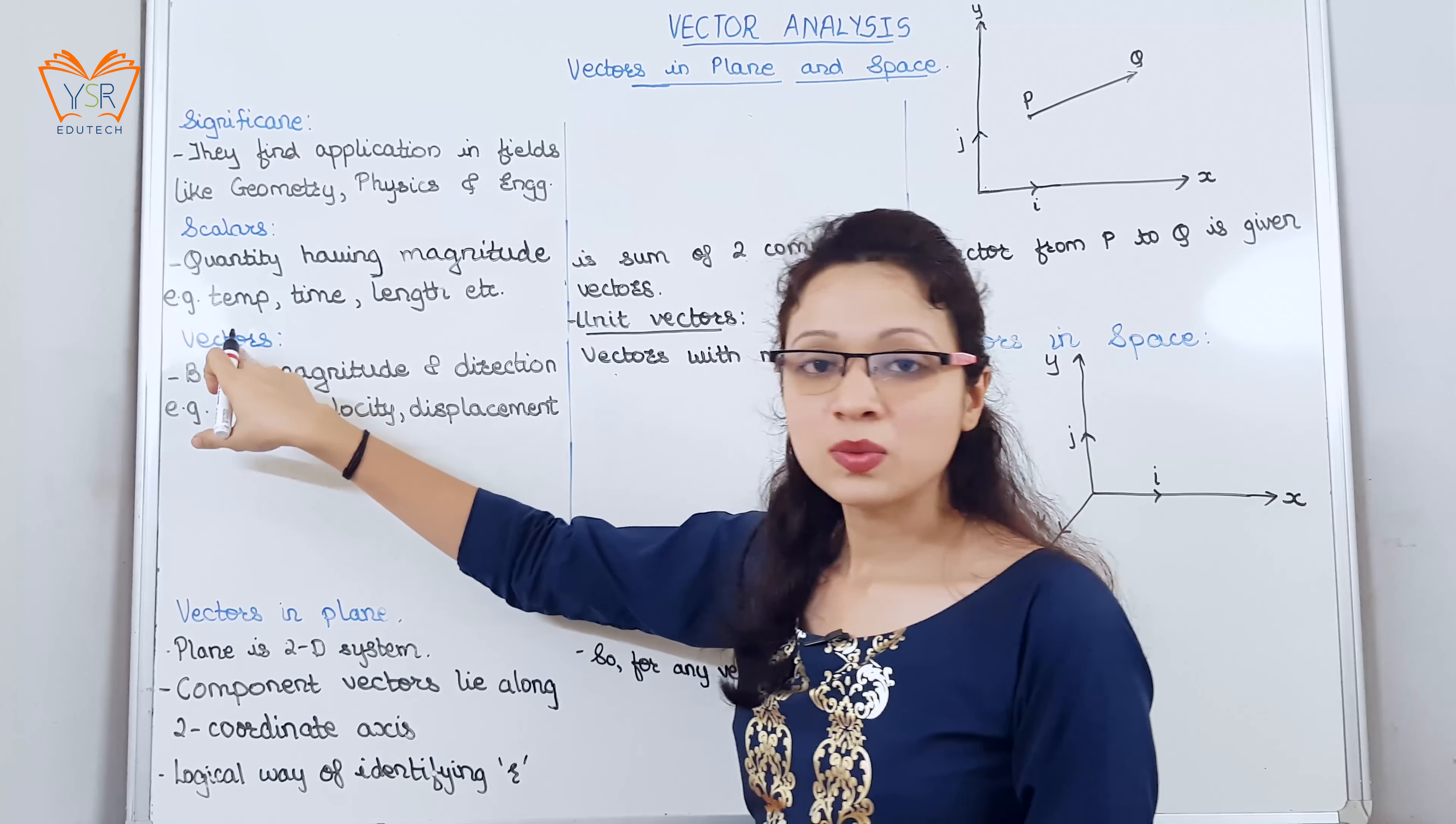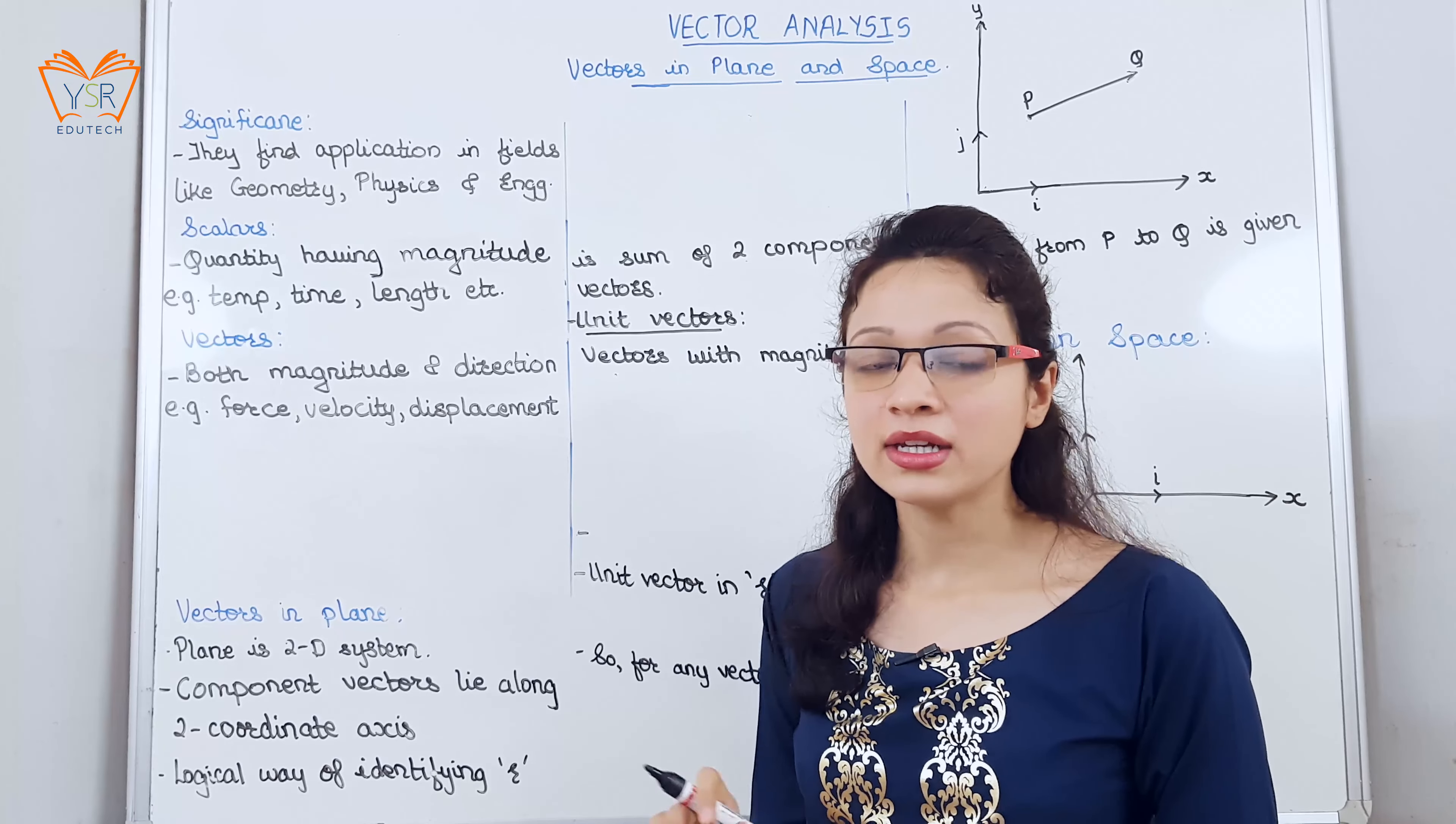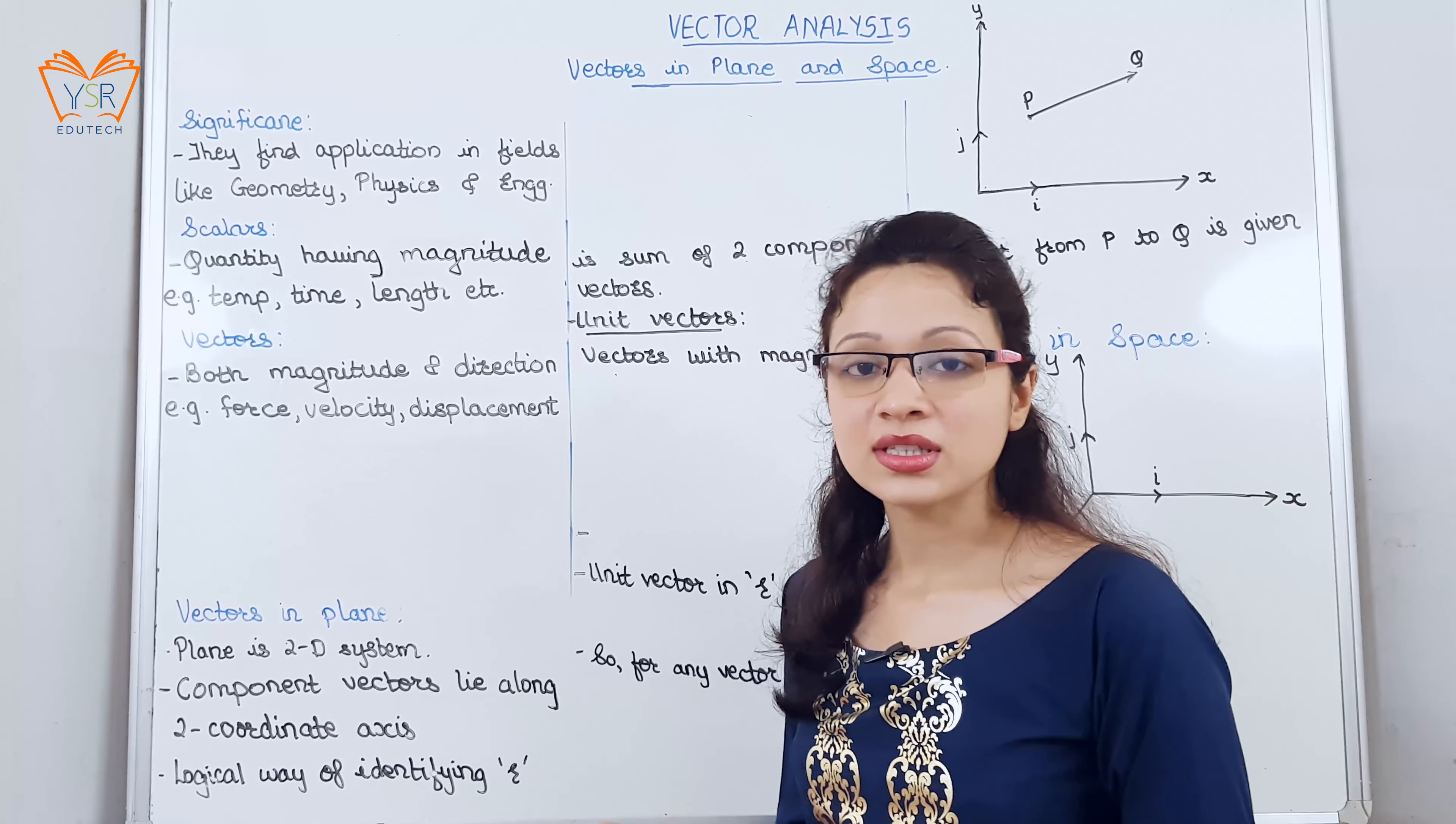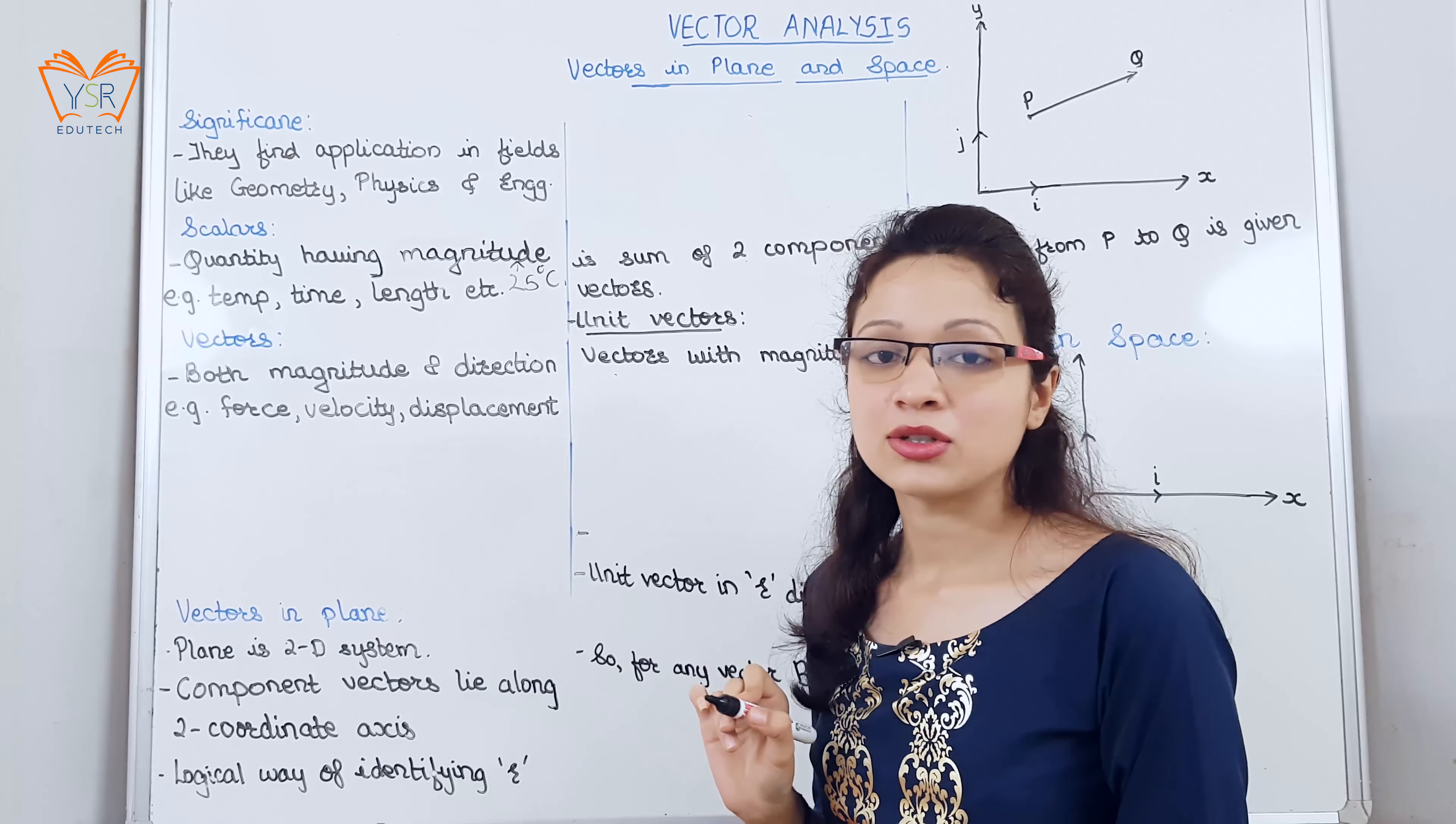Before switching on to what is vectors, let us start with the scalars. Scalars are any quantity having only magnitude and no direction. Example temperature, time and length. Temperature we can say temperature at this moment is 25 degree Celsius. So this 25 degree Celsius indicates magnitude.